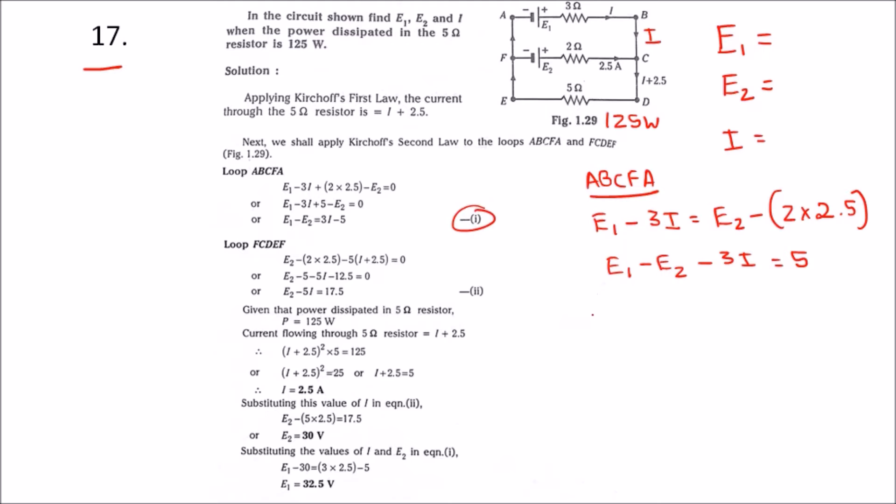Next loop is FCDEF. E2 is equal to 2 into 2.5 plus 5 into (i plus 2.5). This will be the second equation.